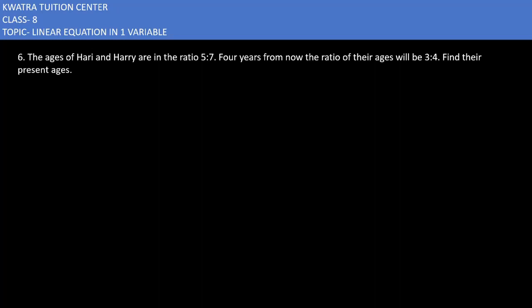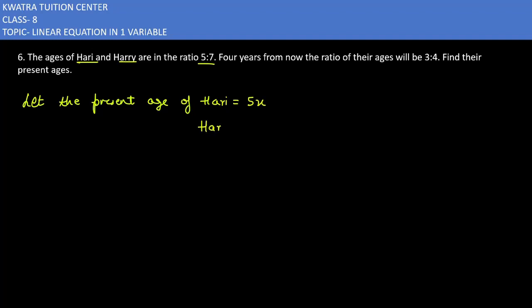Let's start with the sixth one. It says the ages of Hari and Hari are in the ratio of 5:7. Let's try to write it in the form of a situation. So what we can write is: let the present age of Hari be 5x and let the present age of Hari be 7x. But 4 years from now,